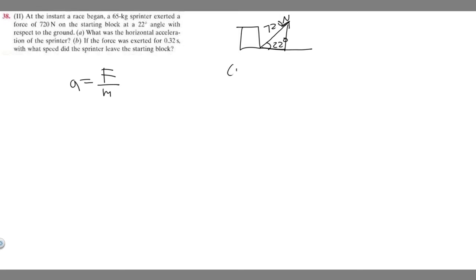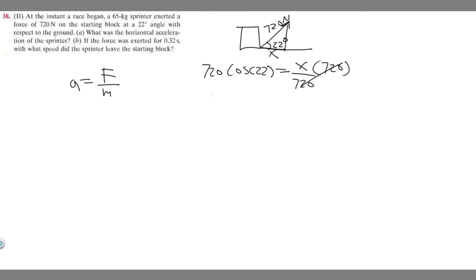The cosine of an angle equals the adjacent over the hypotenuse. If we label the horizontal component x, that's the adjacent side of the angle, so cosine(22) = x over 720. Multiplying both sides by 720, x equals 720 times the cosine of 22, which gives us 667.57 newtons — that's our horizontal force component.